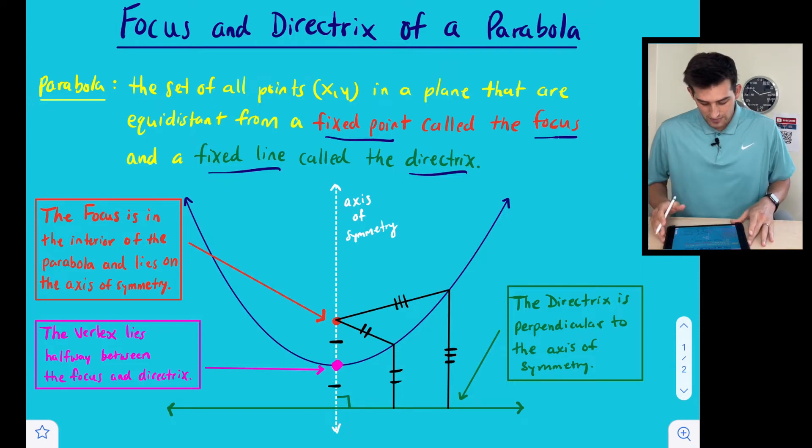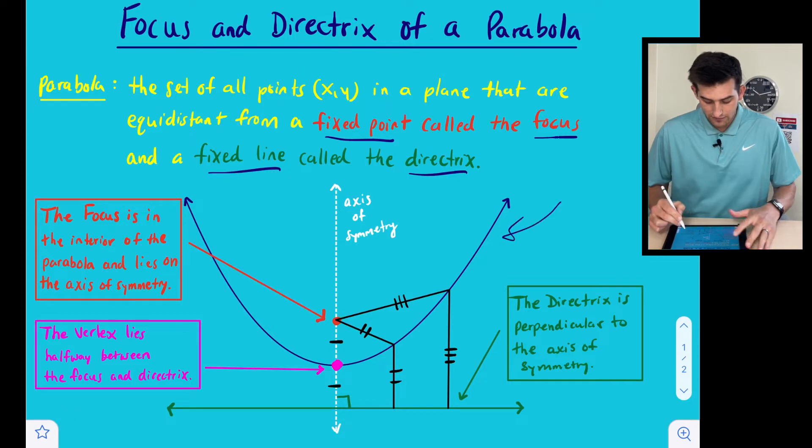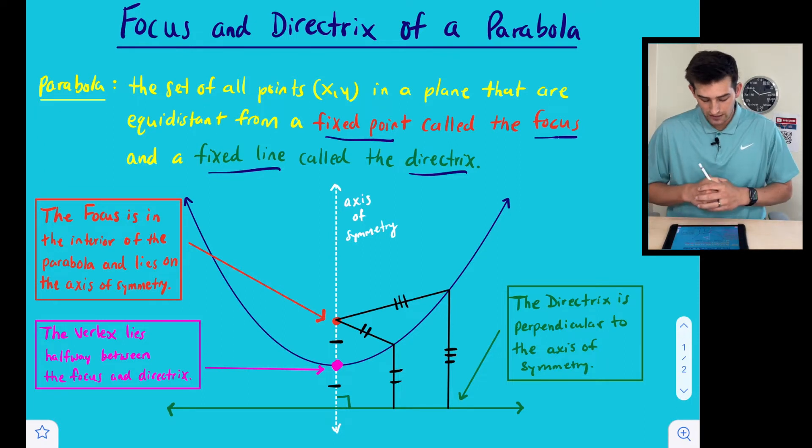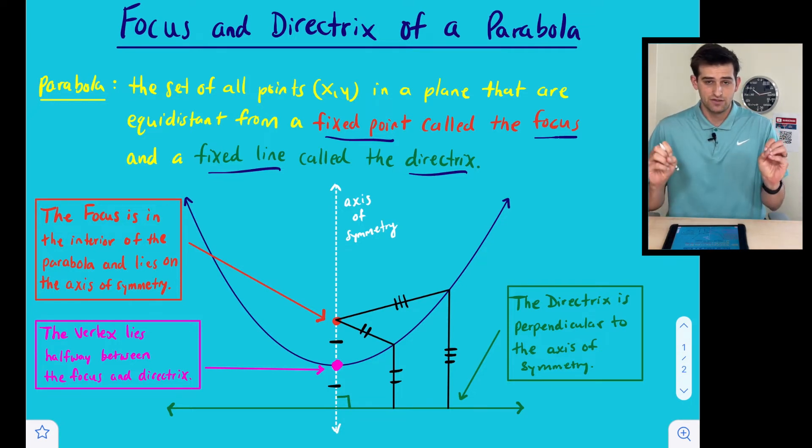So now let's look at our diagram down here. It seems like we have a lot of things going on. We see our parabola here in navy, and then a couple things we know about a parabola already. The axis of symmetry, which is our vertical line here, I got it represented with a white dashed line. That's going to go directly through our vertex. The vertex is in pink, and it's going to lie halfway between the focus and the directrix.